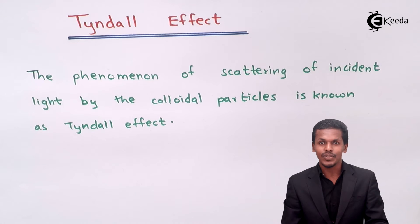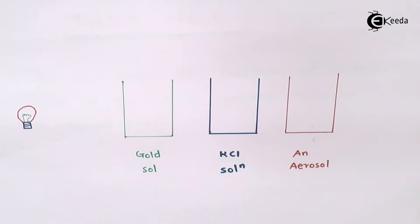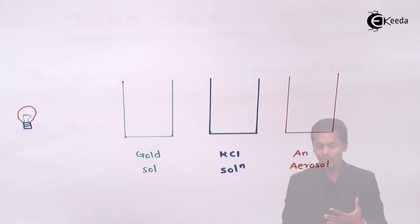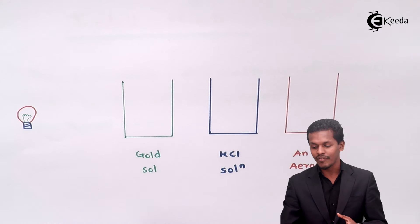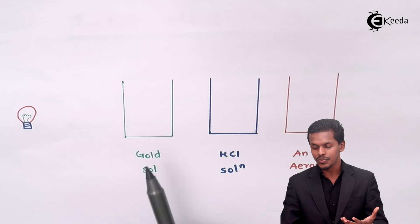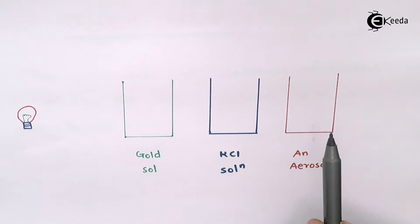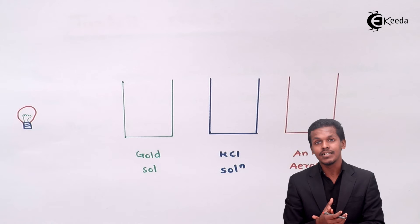Let me give an example so we can understand this in a better way and also understand its importance. Here we have three solutions: one is gold sol, which is a colloid; a casein solution, which is a true solution; and an aerosol, which is again a colloidal solution. There is a beam of light from a source that is incident on these beakers arranged in sequence — gold sol first, casein solution second, and aerosol last.